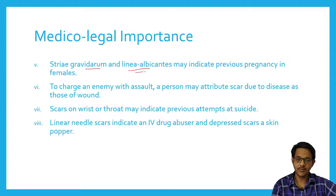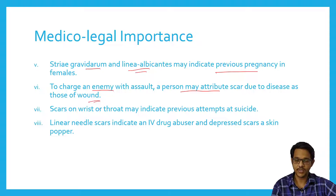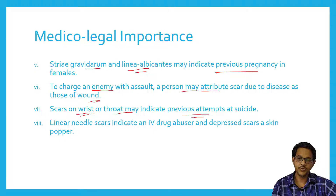Striae and linea albicans, which are a form of scar tissue formed during pregnancy, may indicate previous pregnancy in females. A person may falsely attribute a scar due to disease or old wounds and claim they were assaulted, in order to inflict false charges. Scars on the wrist or throat may indicate previous attempts at suicide. Linear needle-track scars indicate intravenous drug abuse, and depressed scars on skin poppers may also be present.